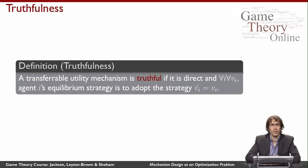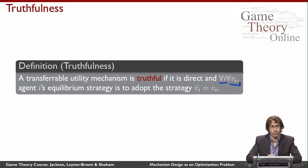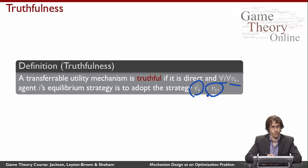Let me begin with something we've already spoken about: truthfulness, now defined in the context of transferable utility mechanisms. A transferable utility mechanism is said to be truthful if it is a direct mechanism, and if for all agents and all valuations each agent might have, agent i's equilibrium strategy is to disclose truthfully — to make his disclosure equal to his actual value.